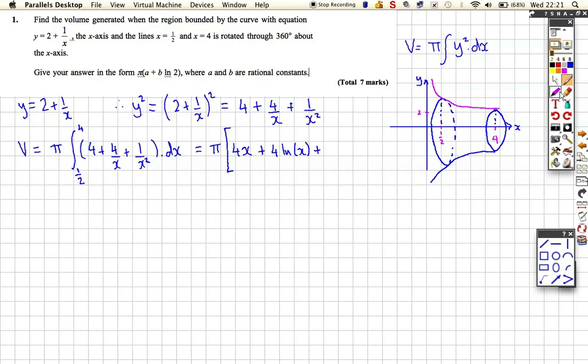Plus, well it's not actually going to be plus, we're going to have a minus. And when we integrate this, this is actually x to the minus 2. Increase the power by 1, divide by the new power is minus 1 over x, or x to the minus 1. And we need to evaluate that between 1 half and 4.